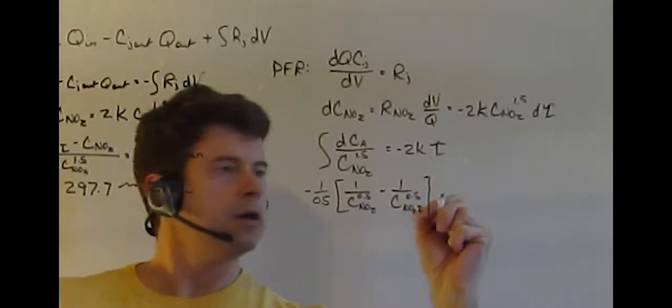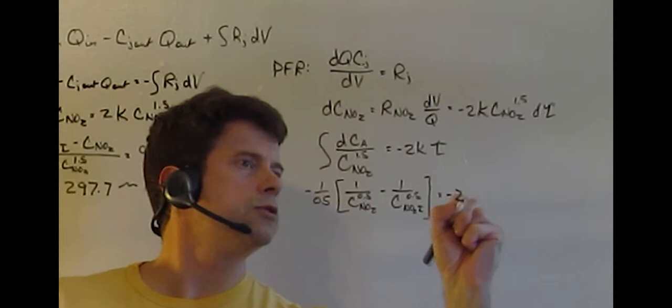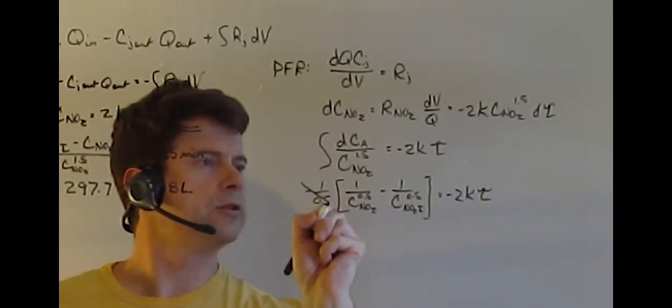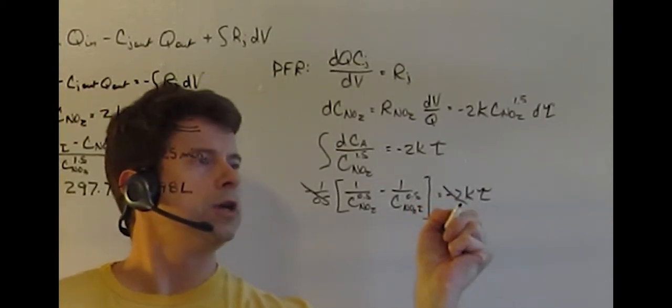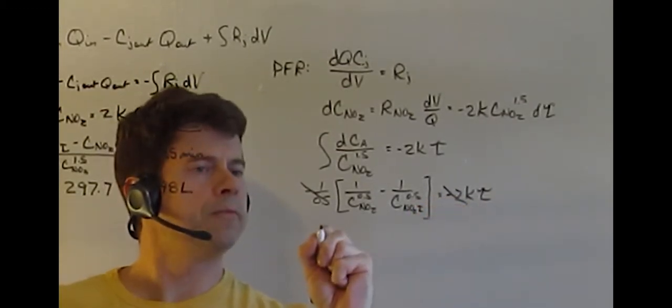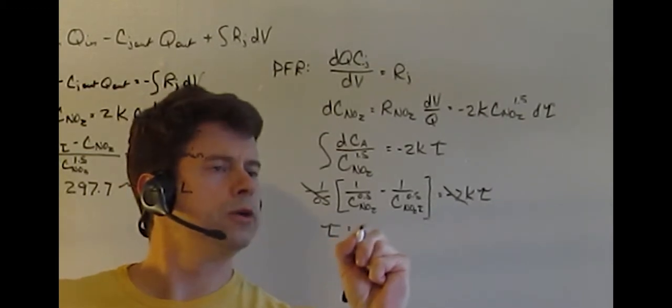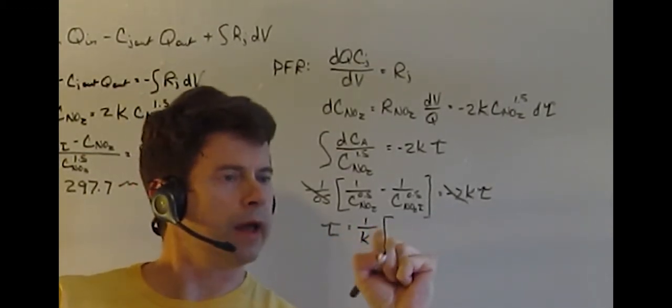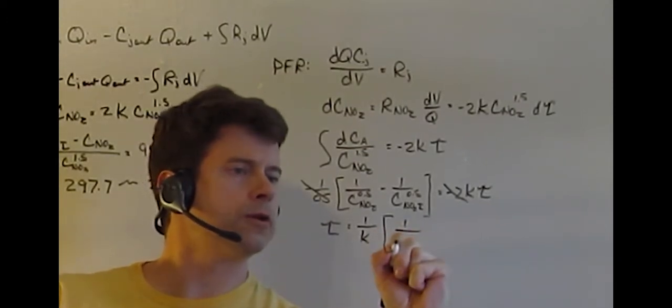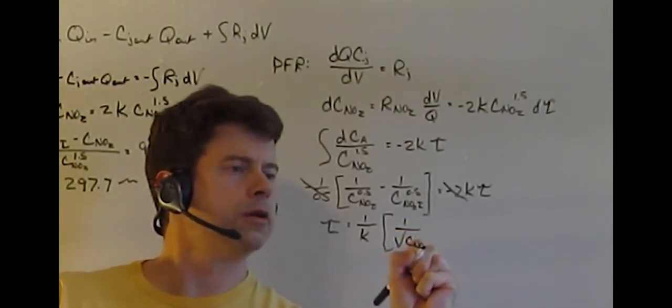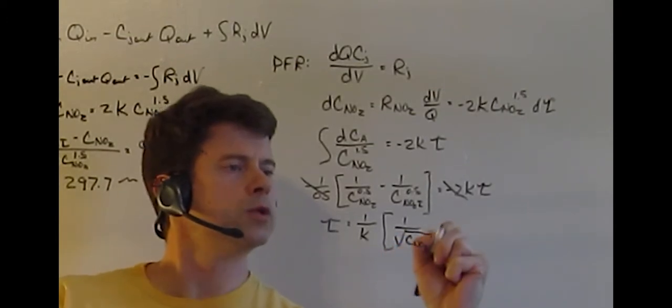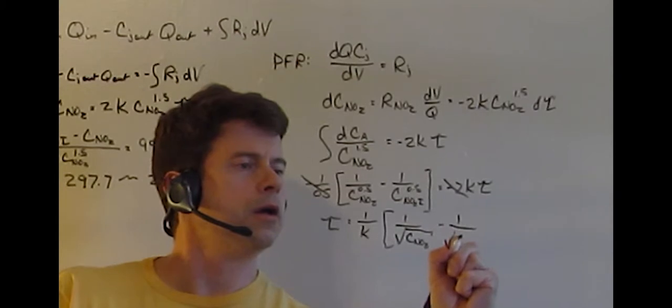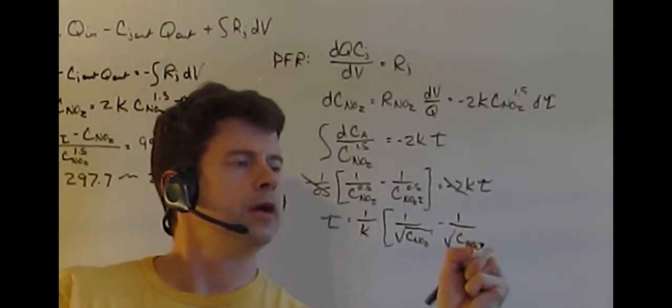and this equals minus 2K tau. Actually, these are equal to each other, so these will cancel. So now to solve for tau, this comes to 1 over K. We now have 1 over the square root CNO2 minus 1 over the square root CNO2 initial.